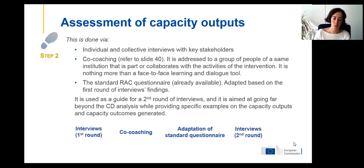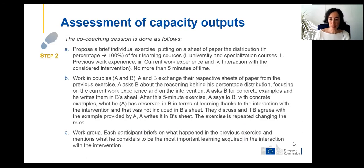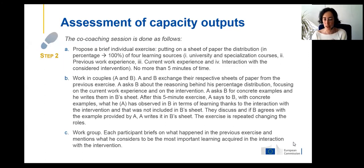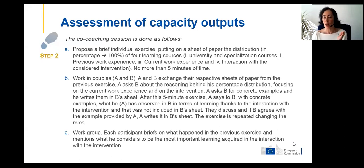Before undertaking the co-coaching, you need an interview with the hierarchical person in charge of the institution, because this person will also need to participate in the co-coaching at the same level as others — since this is a peer-to-peer dialogue. The specific position or hierarchical status of any individual is not important for this exercise. How is the co-coaching done? There is a brief individual exercise: we ask persons to put on paper the four sources of capacity — university, previous work, current work, and interaction with the intervention.